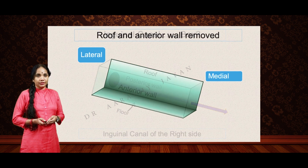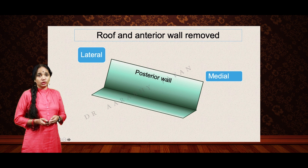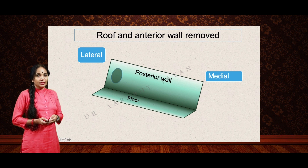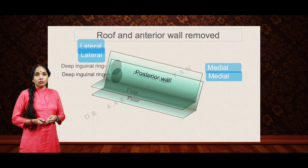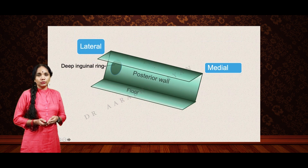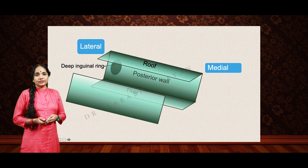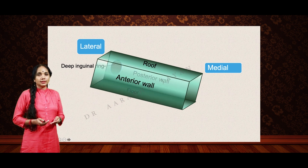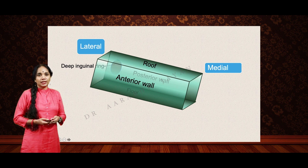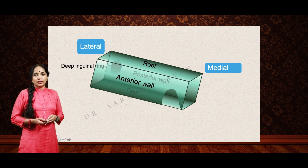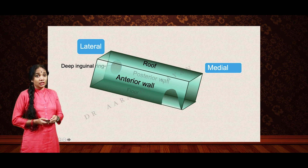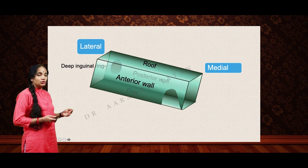Now let's see the boundaries. The roof and the anterior wall are removed so we can clearly see the position of the deep inguinal ring. Here is the floor and the deep inguinal ring, with structures passing through it. When we replace the walls, remember to place the superficial inguinal ring, which is a defect in the anterior wall.